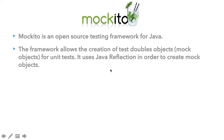So what does this framework do? The framework allows the creation of test double objects, which we already discussed in our previous lectures. These test double objects are nothing but mock objects for unit tests. Mockito allows us to create these test double objects using Java reflection in order to create the mock objects.